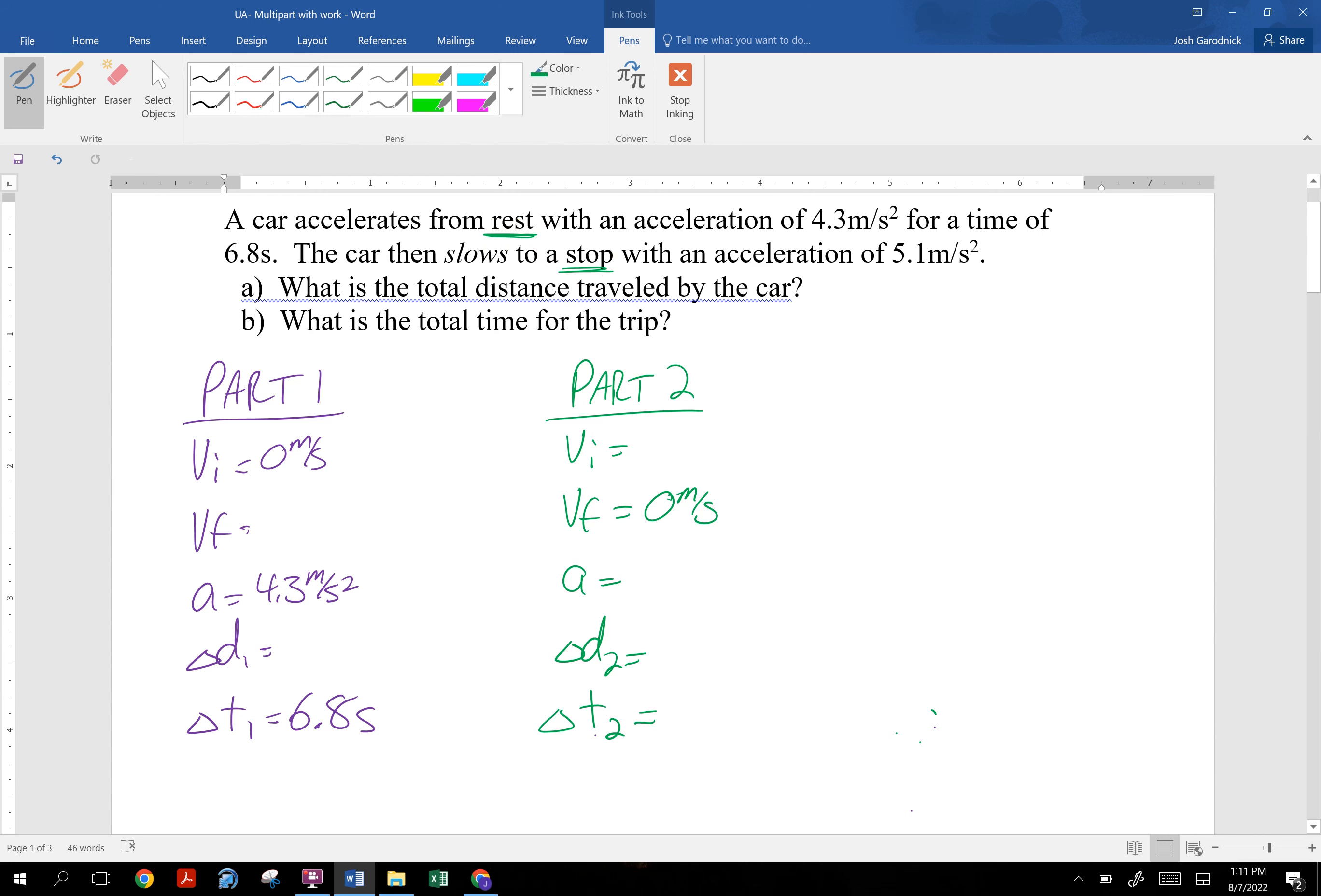The car then slows to a stop with an acceleration of 5.1 meters per second squared. So the final velocity for part two is zero. We are slowing down. That doesn't necessarily mean you have a negative acceleration. What is important is we're traveling to the right with a positive velocity, and in order to slow down, you must have a negative acceleration. So I'm going to write negative 5.1 meters per second squared.